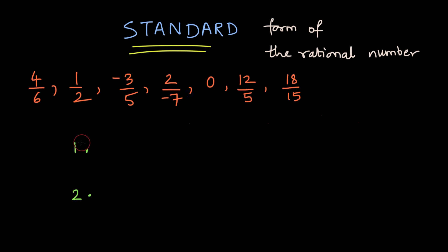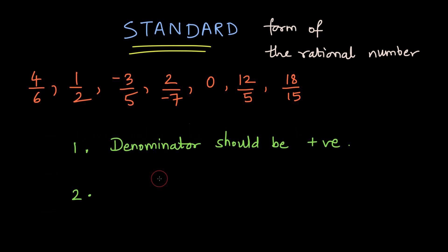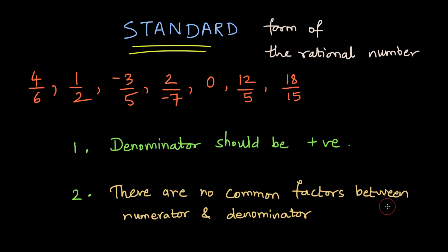There are only two things to be checked when we want to see whether the given rational number is in the standard form or not. The first thing is that the denominator should be positive, and the second thing is that there are no common factors between numerator and denominator except one.